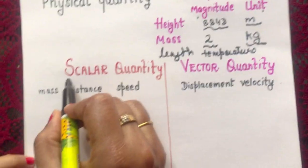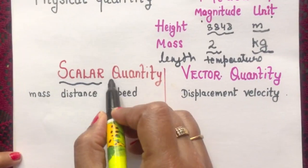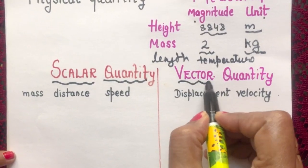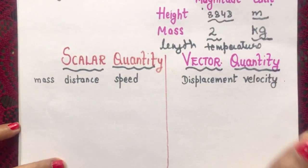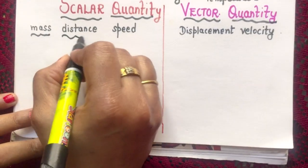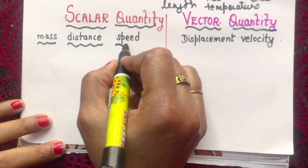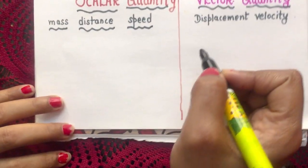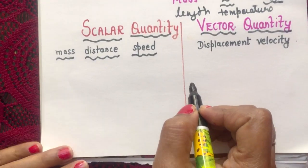Now coming to the topic, what is the difference between a scalar quantity and a vector quantity? Let me give you examples - mass is a scalar quantity, distance is a scalar quantity, speed is a scalar quantity. So how are we going to differentiate?